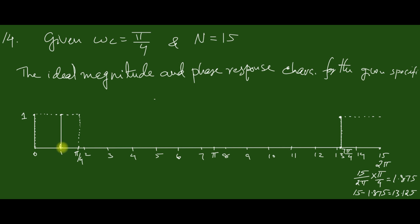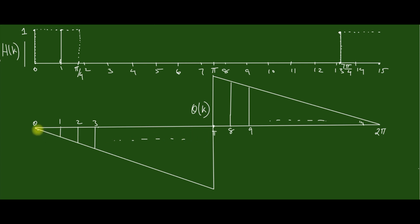Up to pi/4, the samples 0, 1, and 14 are inside the passband. Sample 15 corresponds to the next cycle and cannot be included. So the passband samples are 0, 1, and 14, each with magnitude 1. For all other samples the magnitude is 0. The phase response is also drawn; since it is linear, the phase response characteristics follow a linear form, giving us the magnitude and phase response from which we can determine H(k).